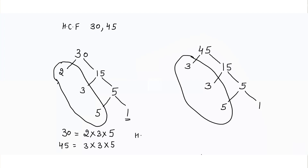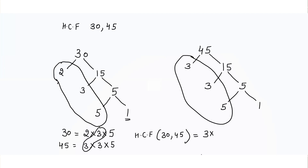Similarly, 45 can be written as 3 × 3 × 5. Now to find the HCF of 30 and 45, I have to find which numbers appear in both. You can see 3 is there in 30 and 3 is there in 45. So we write 3, and then we check for any other common number — 5 is also common. So the final answer is 3 × 5 = 15. The HCF of 30 and 45 is 15.